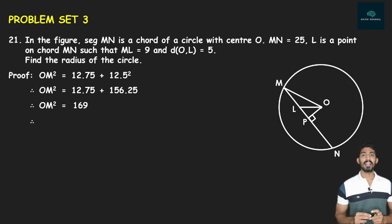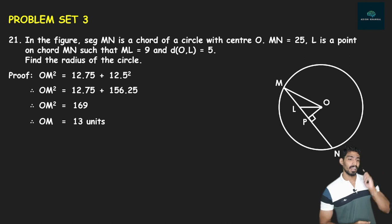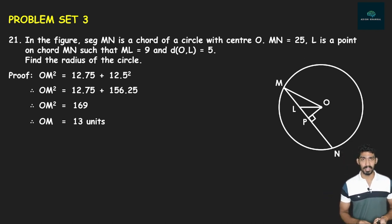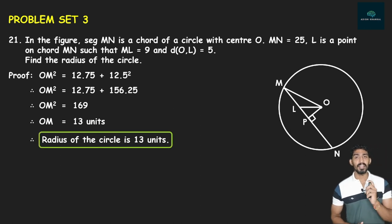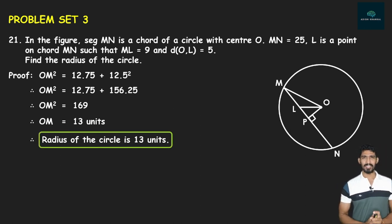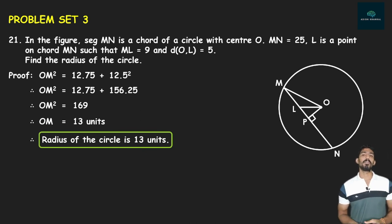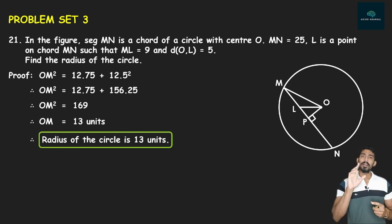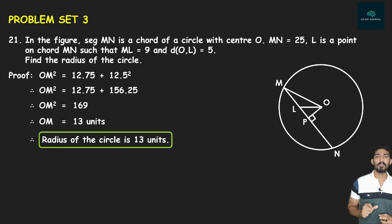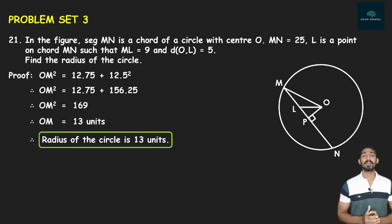OM² = 169, तो OM = √169 = 13 units। OM is acting as the radius of the circle। Therefore, the radius of the circle is 13 units। यह था approach — perpendicular drawn from center to chord bisects the chord, फिर छोटे triangle में Pythagoras, फिर उसी OP² को बड़े triangle में use करके radius निकाला। बहुत simple approach था।